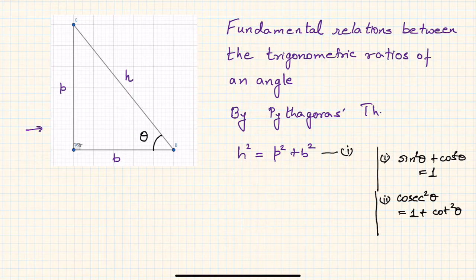In the last two cases, we divided the equation obtained by Pythagoras' theorem by first h squared and then p squared, correct? Now what we are going to do is divide equation one by b squared.